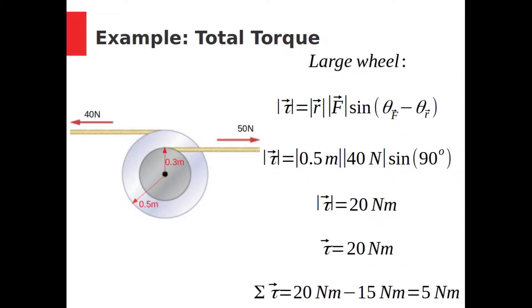For the larger wheel, the lever arm is 0.5 meters, and the force is 40 newtons. Again, the angle between them is 90 degrees. This torque works out to 20 newtons, and it's counterclockwise, so it's positive. The total torque is therefore 20 newton meters minus 15 newton meters, or positive 5 newton meters.